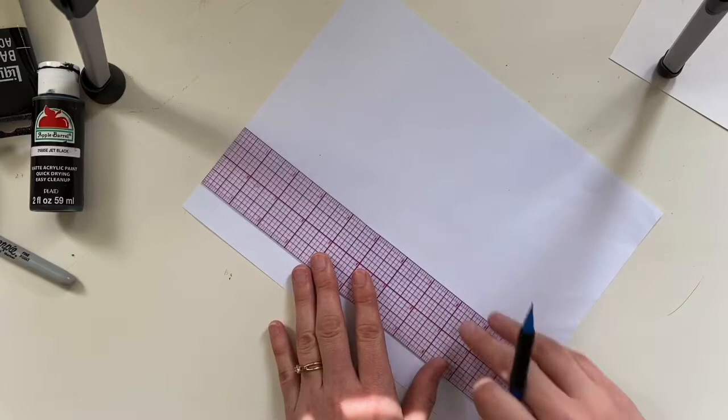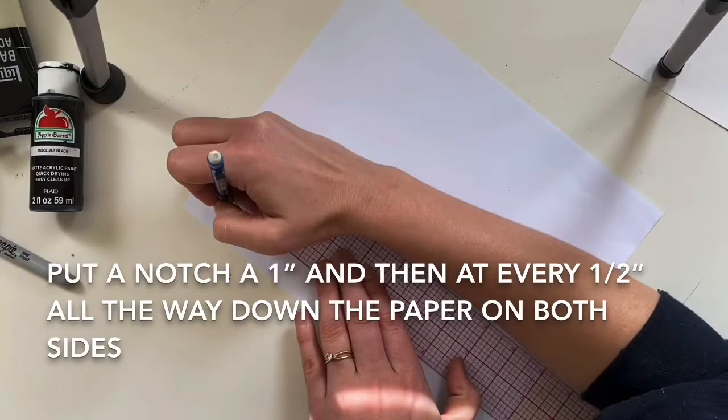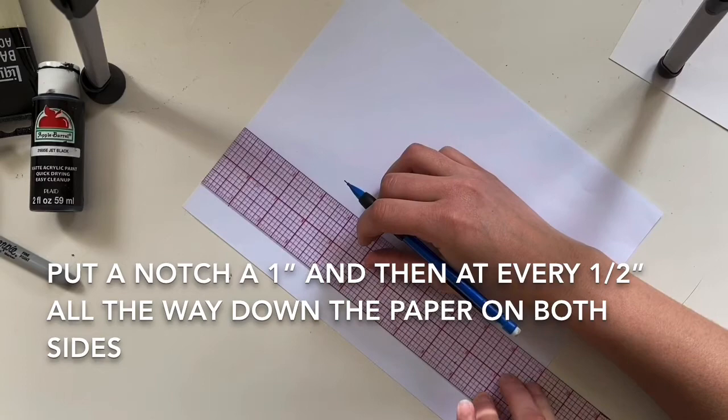So our first mark that we are going to make is going to be at the one inch marker. After that we're going to put a notch every half inch.